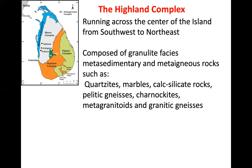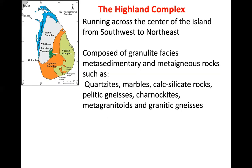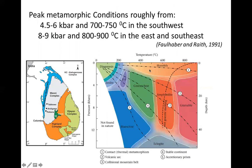These are the main types of rocks in the Highland Complex. The Highland Complex is composed of granulite facies rocks. Please pay attention to this diagram — you can see two axes: one axis is temperature increasing this way, and the other axis is pressure increasing this way.